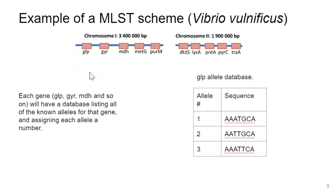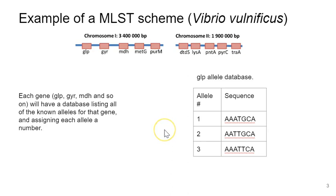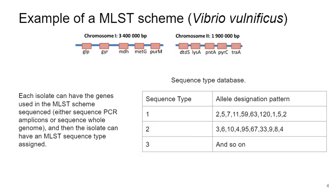For the MLST scheme, there will be an allele database for each designated gene. For the GLP gene, for example, there will be a database maintained where each allele has a number and a known sequence for that particular allele. So there will be a GLP allele database, a GAR allele database, an MDH allele database, a METG allele database, and so on. When you get sequence information for a particular Vibrio vulnificus, you can determine which allele that organism has for each of the genes in the typing scheme. Once you have that information, you can look at the combination of alleles for the 10 different genes and use the sequence type database to match the pattern to the sequence type, or ST.